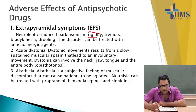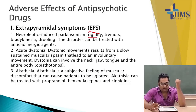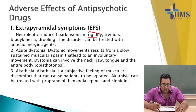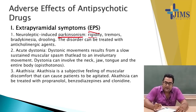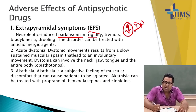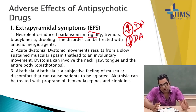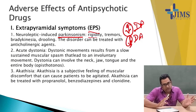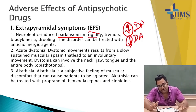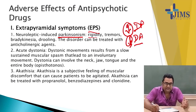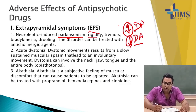Antipsychotics cause Parkinsonism because Parkinson's disease happens when there is decreased dopamine level in the brain, and antipsychotics also decrease dopamine by blocking dopamine channels. That's why the transmission of dopamine is decreased, resulting in Parkinsonian features. That's why we give anticholinergic agents to counteract this dopamine decrease.